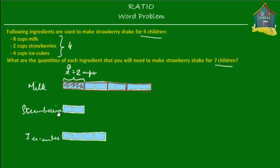How about strawberries? We do a similar thing. For strawberries, we have two units and four children, so each child gets two units divided by four. Two divided by four is half, so each child gets just half a unit, which is half a cup. So child number one needs two cups of milk and half a cup of strawberries.